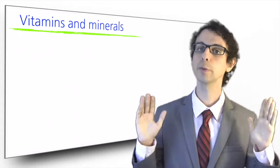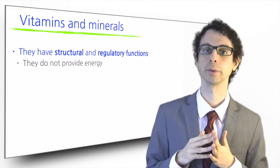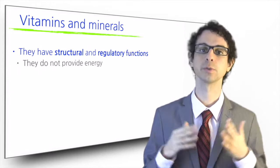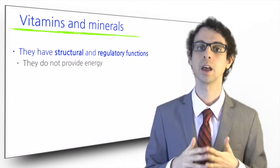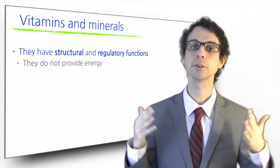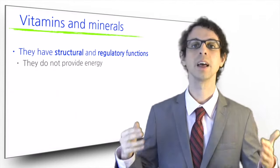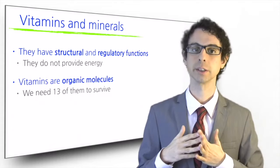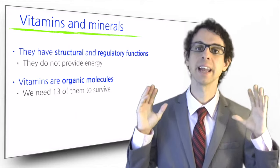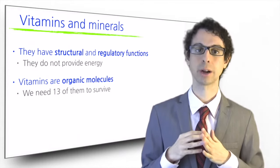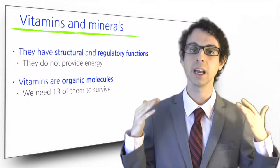Vitamins and minerals do not provide any energy, but they have very important structural or regulatory roles. Calcium and phosphorus, for example, are minerals with a very important structural function in our bones, while vitamin K is an important regulatory molecule for blood clotting. Just like carbs, fats, and proteins, vitamins are organic molecules, which means that they are made by plants, animals, or bacteria, and they contain atoms of carbon in their structure. We have identified 13 different vitamins that our body needs in order to survive.